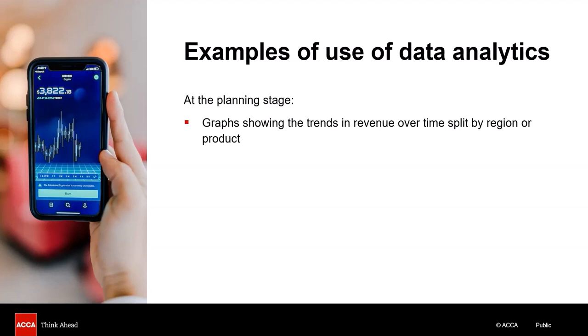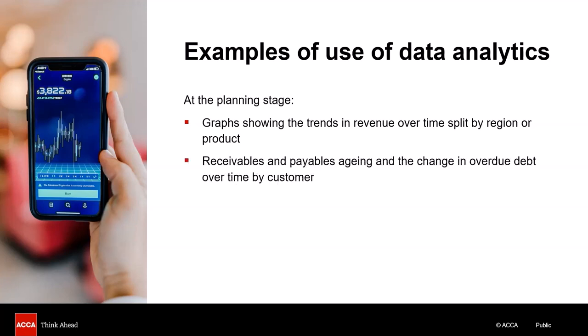At the planning stage, data analytics can help auditors identify areas of risk. For example, analysis of revenue can be done product-wise or region-wise rather than just the total revenue figure, and any significant variances from expectation can be looked into in further detail. Aging of receivables can be done quickly to identify debts which are outstanding for a long time — this can be done for individual customers to identify payment trends. A customer who normally pays within 60 days but has an amount outstanding for more than 90 days is likely to be irrecoverable and may need to be written off.